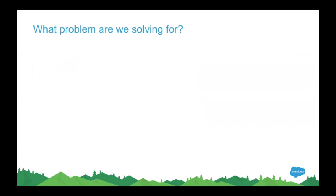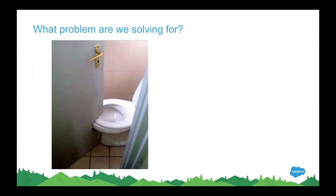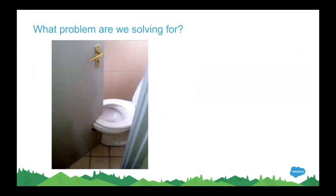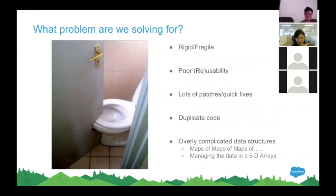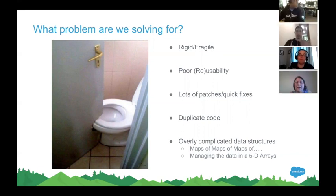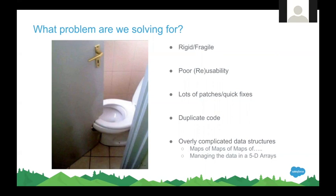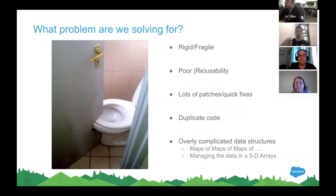So what problem are we solving for? Basically you've probably seen code that's not really solving the right issue. There's a solution in place, but it could definitely be improved. The code might be rigid or fragile, has poor reusability so you have to end up repeating yourself — violating the DRY, don't repeat yourself, mantra. Your code may need a lot of patches and quick fixes, or you have to duplicate a couple hundred lines for account and the same couple hundred lines for contact just because it's a different object.